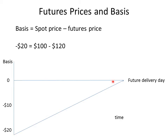A simplifying assumption is that over time basis declines in a linear manner, going from negative $20 to zero. In reality, basis tends to meander — sometimes quite high or quite low — but eventually, through the forces of arbitrage, it goes to zero. If we make the linear simplifying assumption, it is then an easy calculation to estimate what the basis will be at any particular point in time. For example, using simple linear interpolation, we might estimate the basis to be negative $10 at the midpoint.